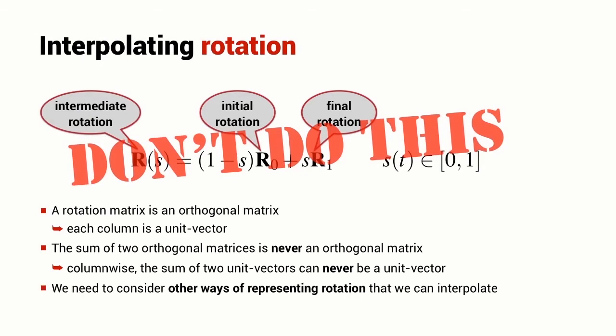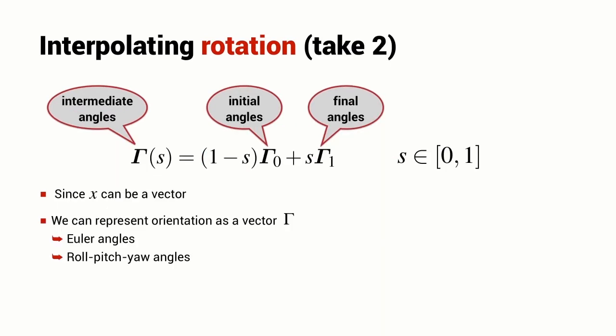We need to consider other ways of representing rotation that we can interpolate. So one way to achieve this is to recall that this interpolation formula works for vectors and we can represent a rotation in terms of a vector of angles. It could be three Euler angles or it could be three roll-pitch yaw angles.